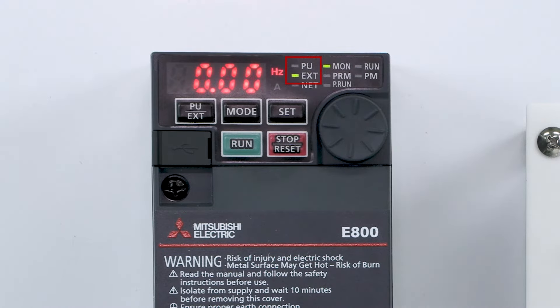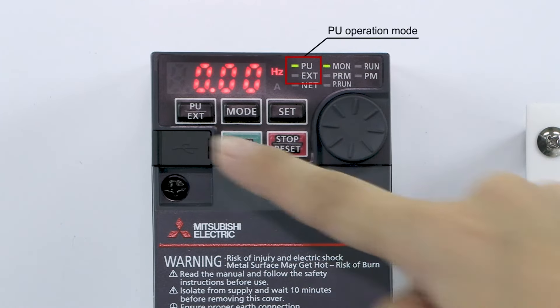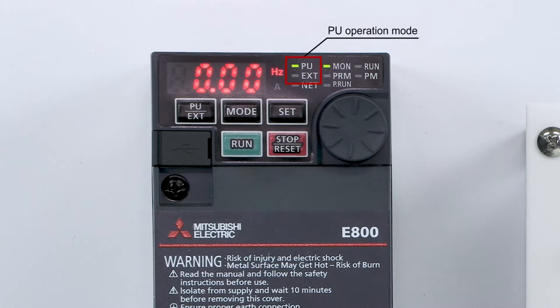Adjust the operation mode. Press the PU EXT key to select PU operation mode.